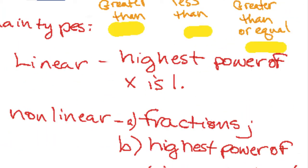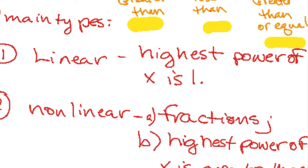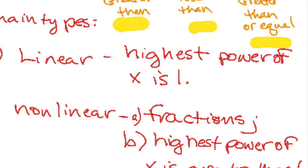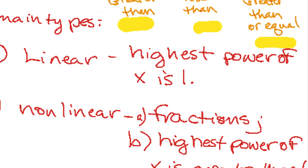So there are two different main types, and one is linear. The highest power of x is one in your inequality, like 3x plus 1 is less than 4. Those are pretty straightforward. You just solve for x.